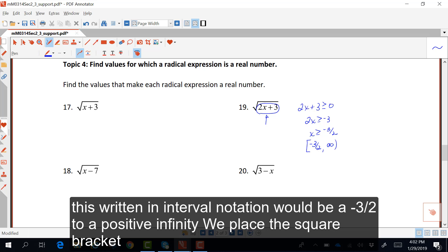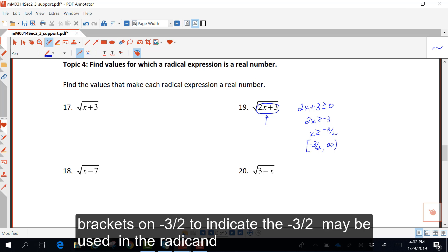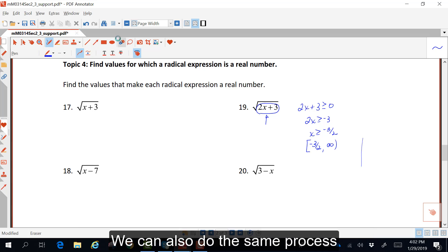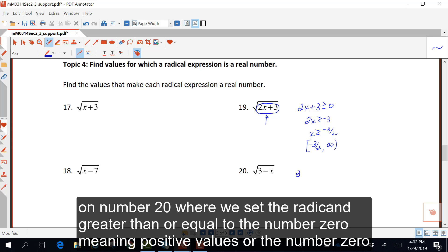This written in interval notation would be a negative 3 halves to a positive infinity. We place the square bracket on the negative 3 halves to indicate that negative 3 halves, you may use that number in that radicand.